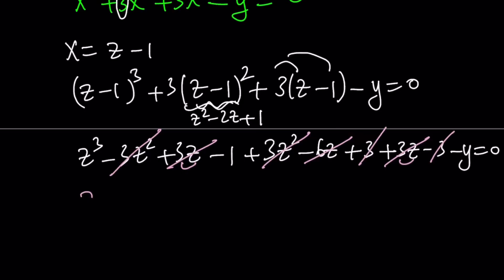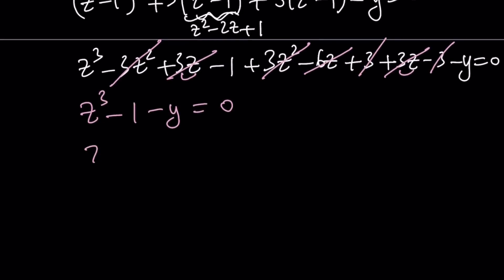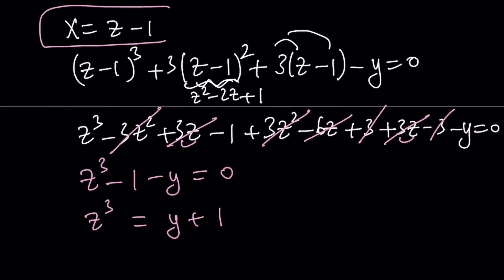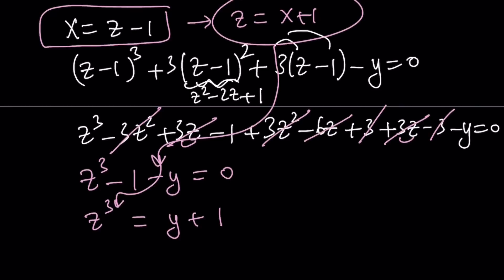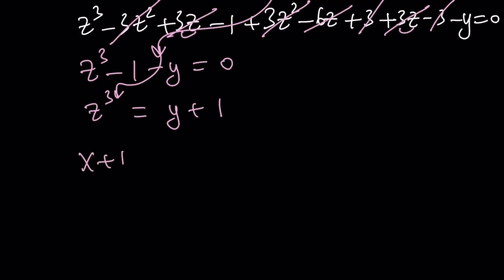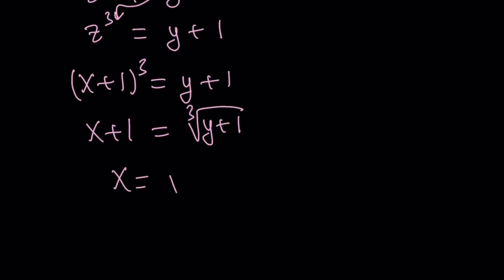So we get z cubed minus 1 minus y equals 0, which can be written as z cubed equals y plus 1. That's really nice — though it doesn't simplify this cleanly most of the time; usually there are residual z terms and constants. Now notice that z can be written in terms of x, because x is z minus 1, so z equals x plus 1. We back-substitute: x plus 1 quantity cubed equals y plus 1. Now cube root both sides and subtract 1 to get x in terms of y.